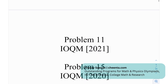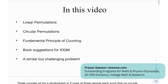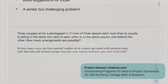The two problems are problem number 11 from IAQM 2021 and problem number 15 from IAQM 2020. In this video, we're going to be learning about linear permutations, circular permutations, the fundamental principle of counting, book suggestions for the IAQM, and at the end, a similar challenge problem.